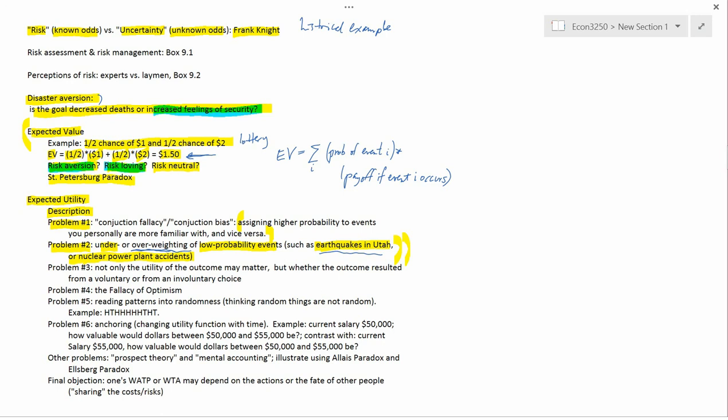Neither problem number one nor problem number two is really a problem with expected utility theory in general. What these two are saying instead is that people don't judge the probability correctly. And so they're using the wrong probability numbers. So the formula is expected utility is the sum over all possible outcomes of the probability of the event times the utility of the payoff in case that event occurs. Problem number one and problem number two are getting at people using the wrong probabilities. Some of the other problems are like that, but others will take aim at the second part, which is the utility of the payoff and those functions. But we'll stop here for now.